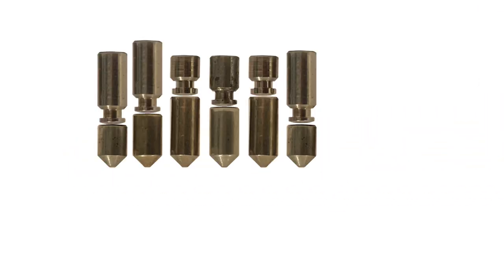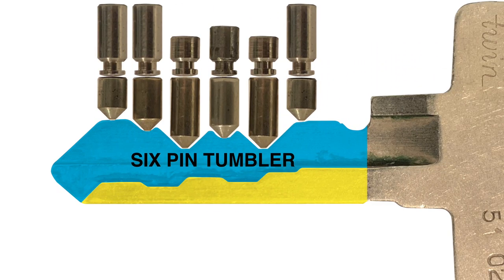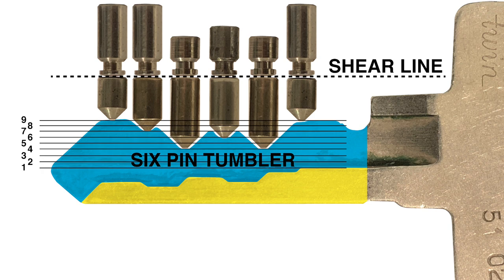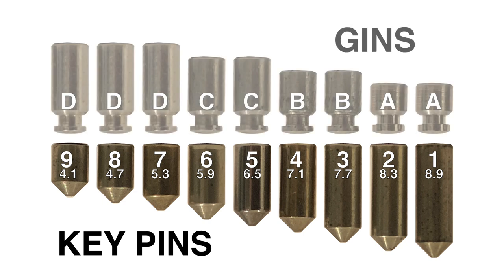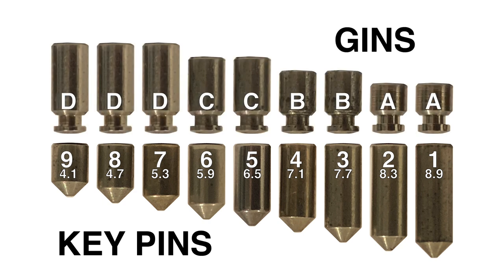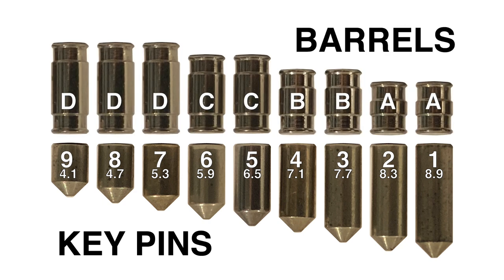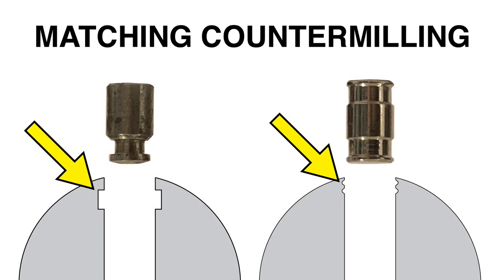There are 6 pins in the pin tumbler mechanism which must be lifted to the shear line for the lock to open. There are 9 possible key pin heights and 4 driver heights which are either gin or barrel drivers. These drivers each have their own corresponding counter milling in the pin chamber of the plug below the shear line that matches their geometry. They each require a different special technique to be successfully picked.